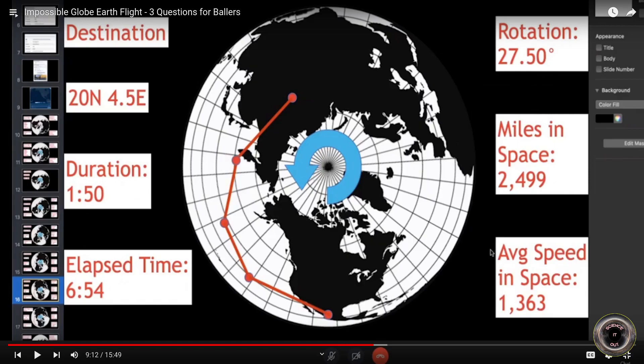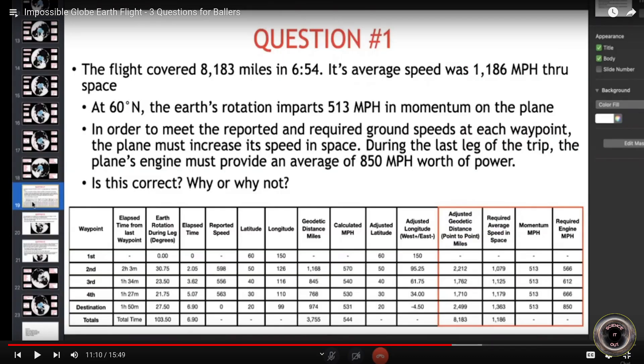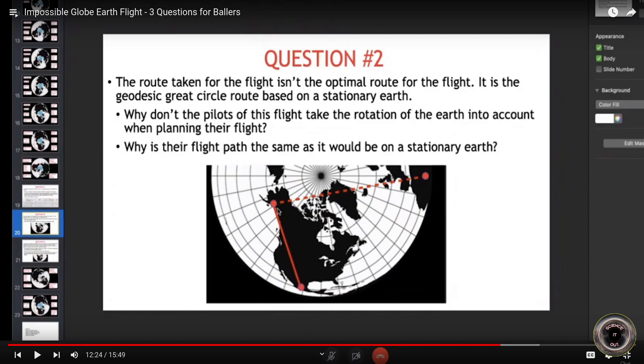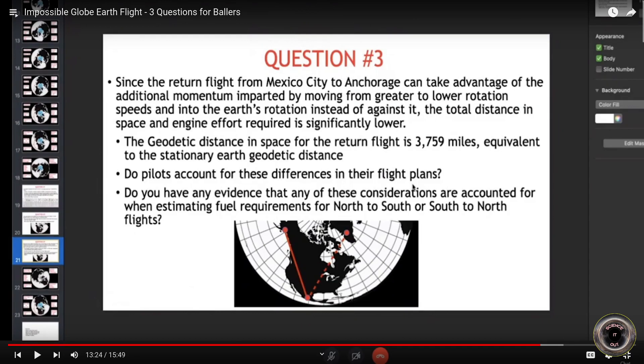He then poses three questions. The first one is basically whether he's correct in thinking that the plane has to accelerate during the flight and that the engines need to provide more power near the end of the flight because of that. The second question is why the plane doesn't take the shortest path as viewed from the inertial frame. The third question is about the return journey and how it's shorter in the inertial frame and so according to Brandon it should use up less fuel.